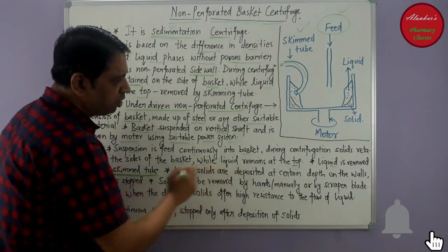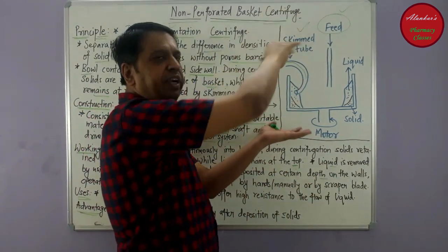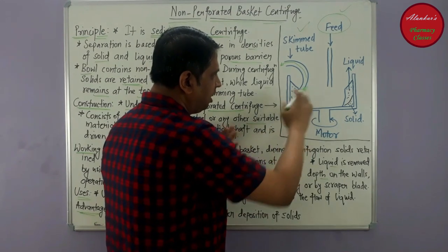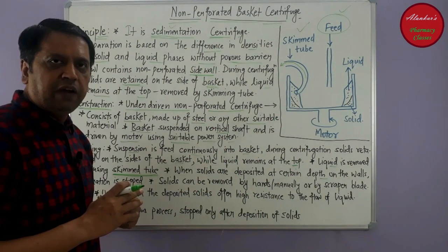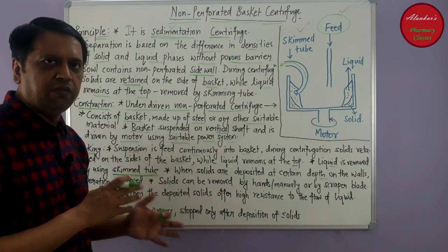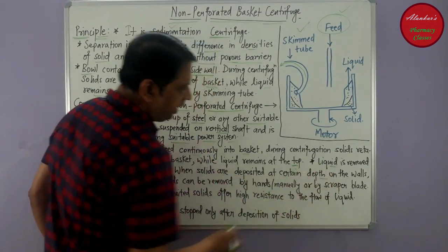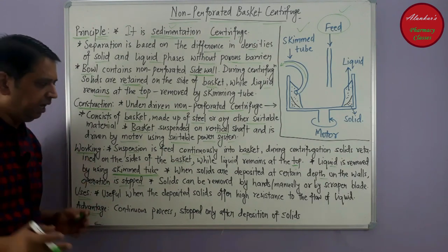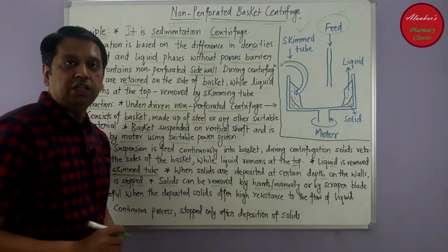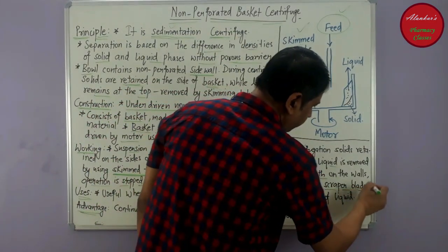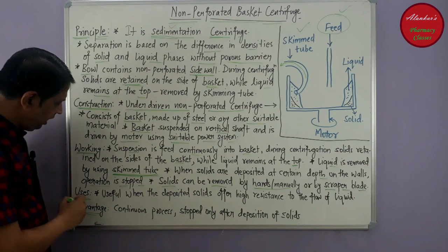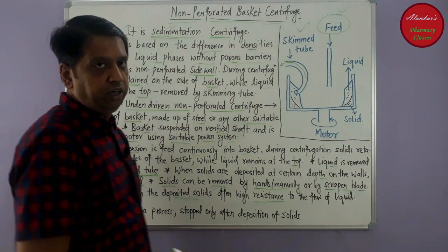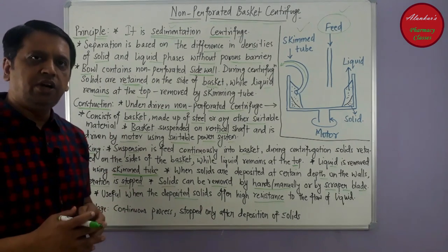When solids are deposited at a certain depth — as we continuously feed suspension, the layer of solids keeps increasing — at some point we have to stop the centrifuge, wash the solids, remove them, and start again. After deposition of solids at certain depths, the operation is stopped and solids are removed by hand, manually, or by any suitable scraping blade. This centrifuge is basically useful when the deposited solids offer high resistance to the flow of fluid.